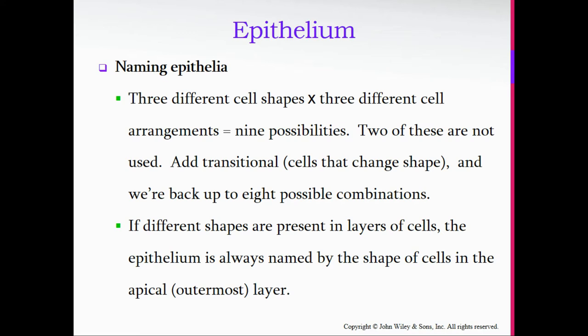There is also an additional kind called transitional, which is unique. Transitional epithelium is found in areas of high stretch where the tissue can be stretched out. Depending on when you view that tissue, it can change the shape of the cell. If the tissue is stretched out, the cells get flatter. If the tissue is not under stretch, they get shorter and fatter. That's why they're given the classification of transitional.